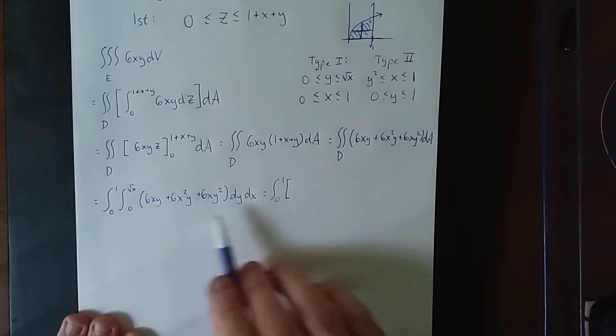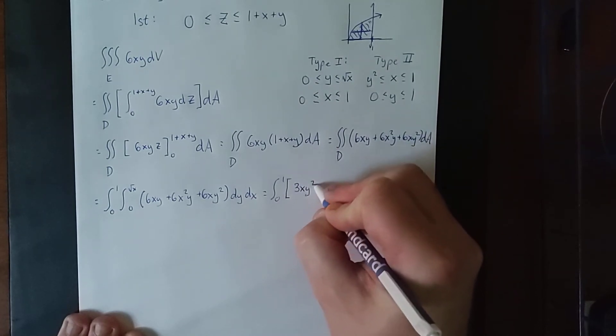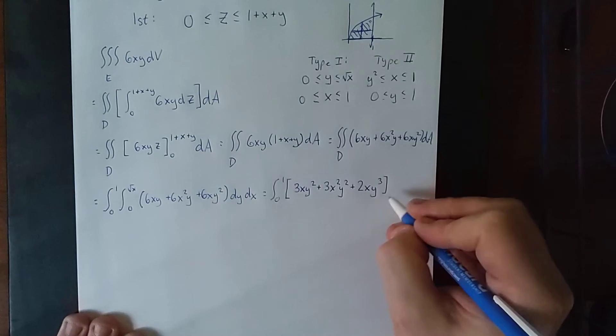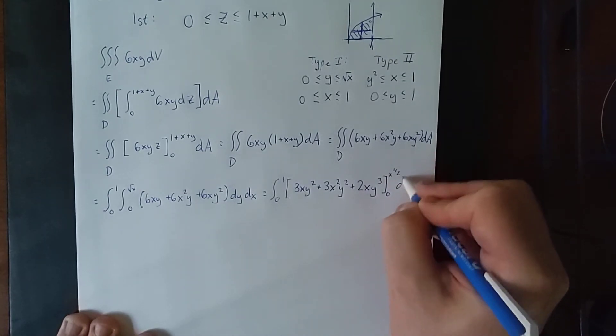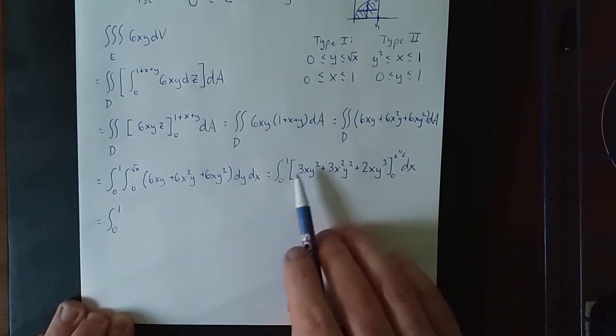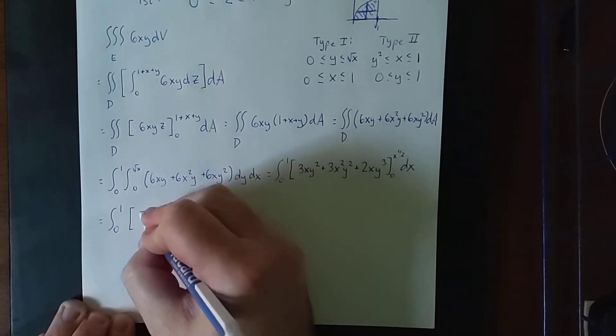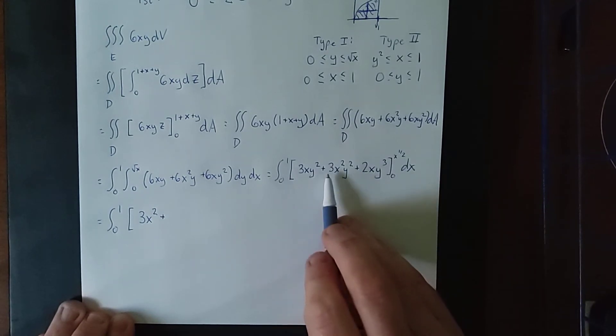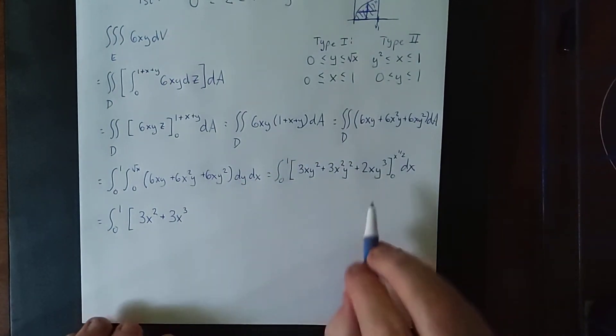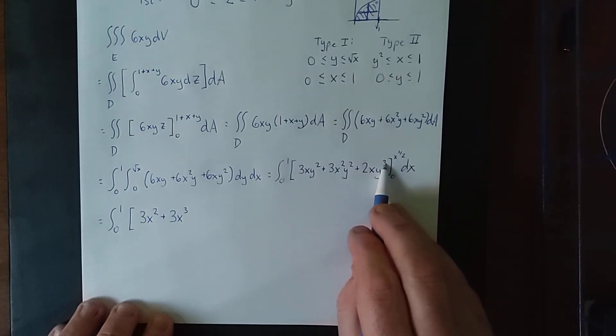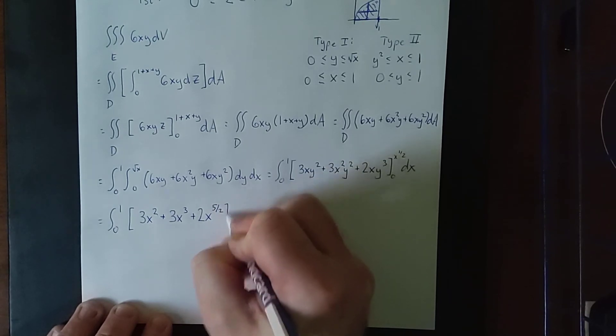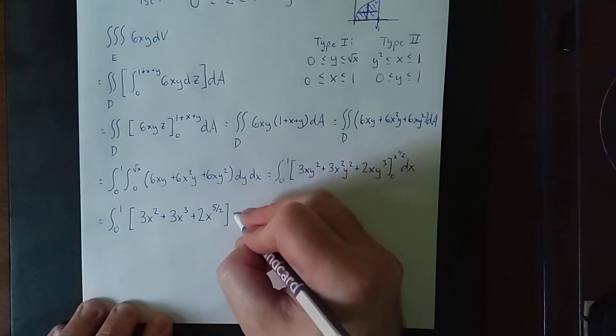Evaluating our first iterated integral and integrating with respect to y, we will get 3xy squared plus 3x squared y plus 2xy cubed. Going from lower bound 0 to upper bound, let's call it x to the 1 half power in anticipation of what's about to happen. Now plugging this in, we are going to get 3x times the square root of x squared. So it'll be 3x times x. For the second one, we'll have 3x squared times the square root of x squared. So it'll be 3x squared times x. So 3x to the third power. And for our last one, we will have 2x times x to the 1 half power cubed. Cubing x to the 1 half power gives x to the 3 halves power, multiplying by an additional x adds 1 to that exponent. This will be 2x to the 5 halves power. Plugging in the lower bound of 0, we'll zero everything out, and we'll be left with simply this.